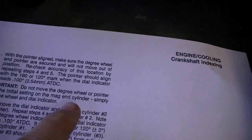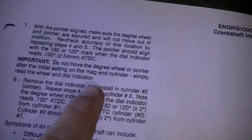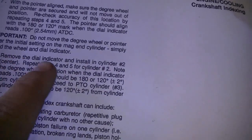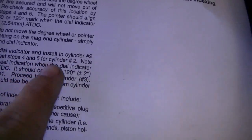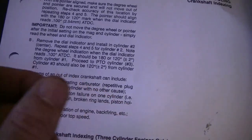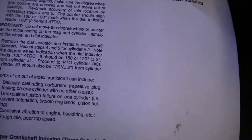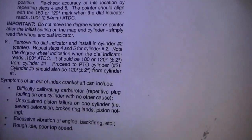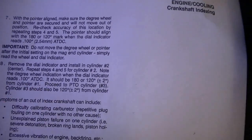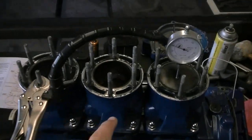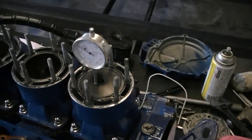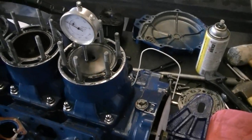And it says after that, it says do not remove your pointer, keep it in the right. It says remove the dial indicator and install on cylinder number two. Repeat steps four and five, which is checking for point one zero zero after top dead center. And this will tell us if we're aligned. So I'm going to go ahead and do that. I'm going to move to the center one, recheck my top dead center and double check and see what it says.